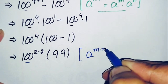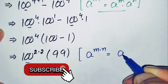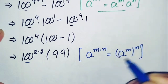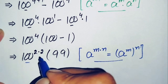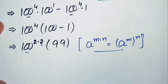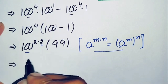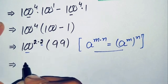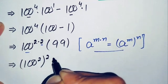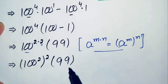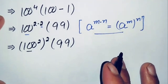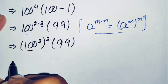We use the exponential math property: a to the power m times n, which can also be written as a to the power m, whole raised to the power n. Using this property, we take the 2 out so that 100 raised to the power 2 times 2 becomes 100 raised to the power 2, whole squared, times 99. Now we will find the value of 100 raised to the power 2, or 100 squared.